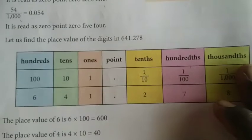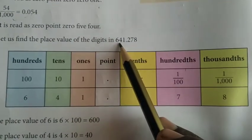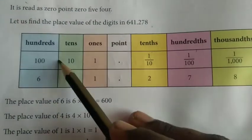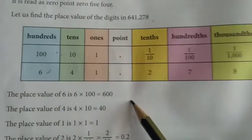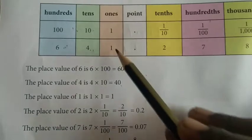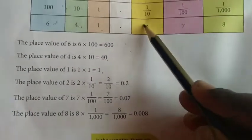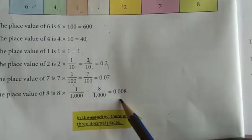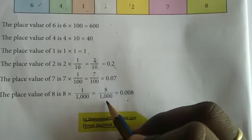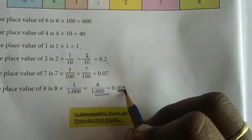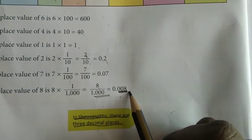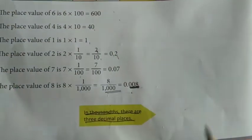Now place 641.278 in the place value chart. Place value of 6 is 6 into 100 = 600; 4 into 10 = 40; 1 into 1 = 1. After the decimal point: 2 into 1 by 10 = 2 by 10 = 0.2; then 7 into 1 by 100; and 8 into 1 by 1000. After the decimal point there should be 3 numbers — don't forget this. Write the digits first and then fill in zeros as needed.